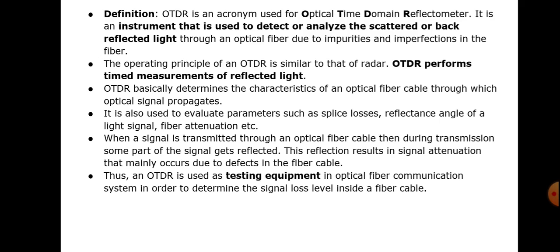The characteristics that can be measured include the length of the fiber where a defect occurs or the refractive index of the fiber. It is used to evaluate parameters such as splice losses, reflectance, fiber attenuation, etc. When a signal is transmitted through an optical fiber cable, some part of the signal gets reflected, and this reflection results in signal attenuation that mainly occurs due to defects in the cable.